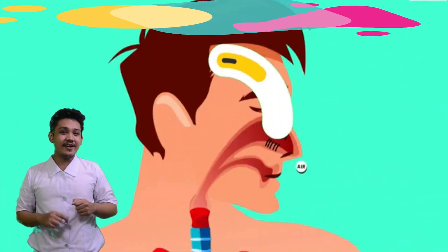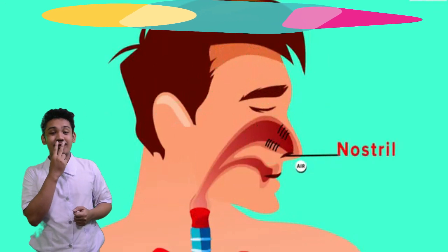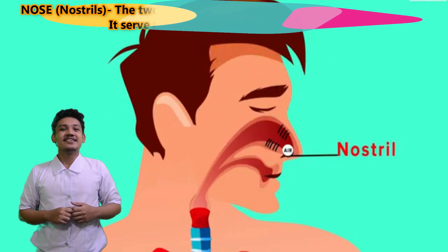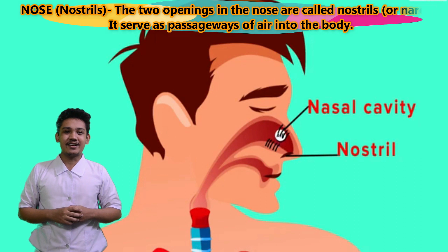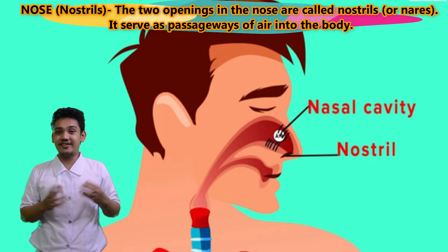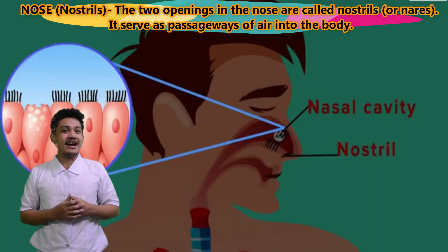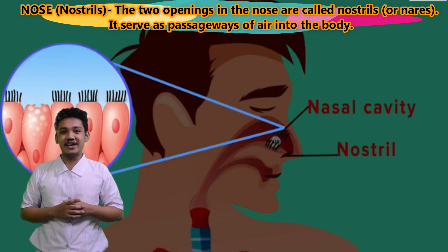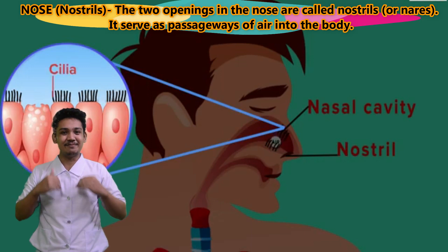The first part is the nose, or the nostrils. The two openings in the nose are called nostrils, or nares. It serves as passageways of air into the body.